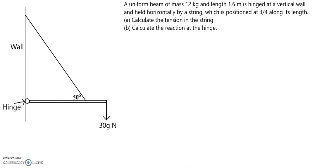So for part A, on the diagram all the relevant forces need to be shown. Now because the beam is uniform, its weight of 12g Newtons will act vertically downwards at the centre of the beam.